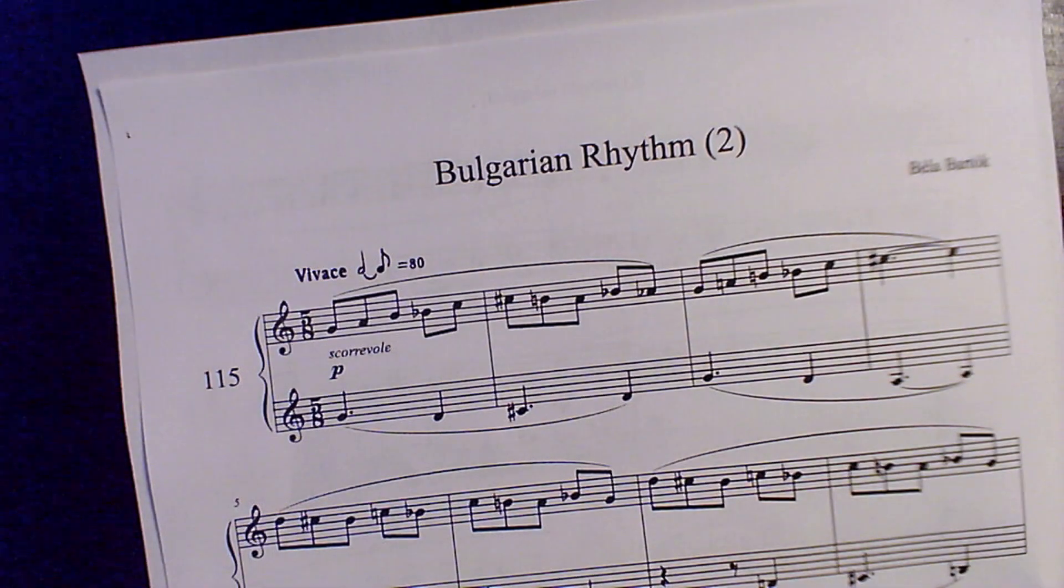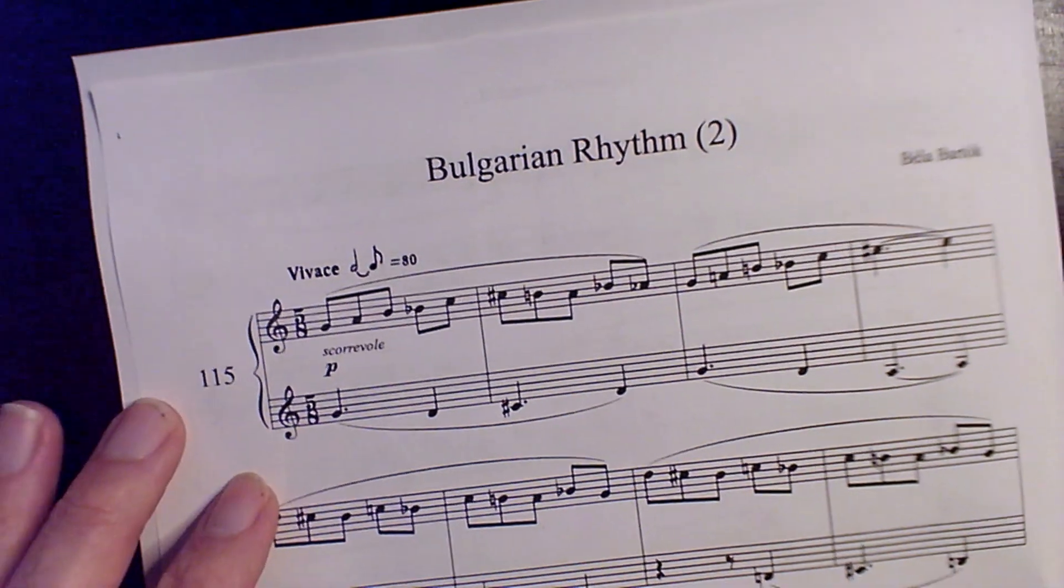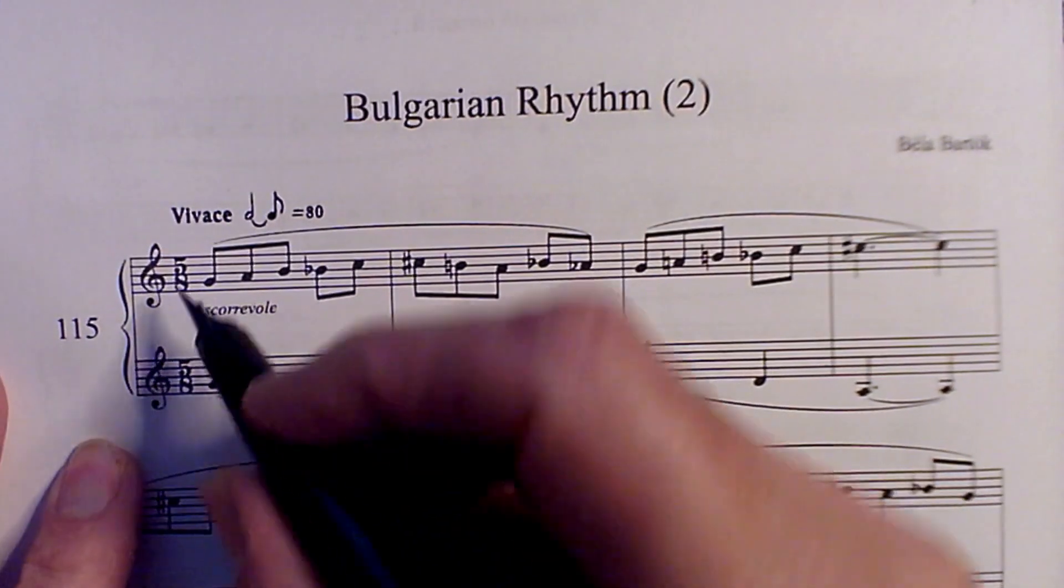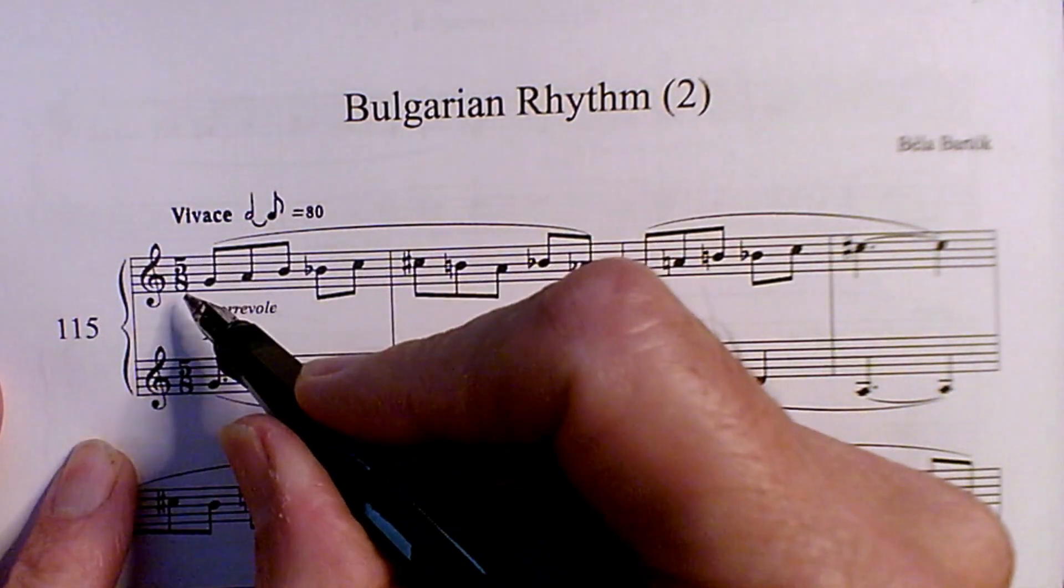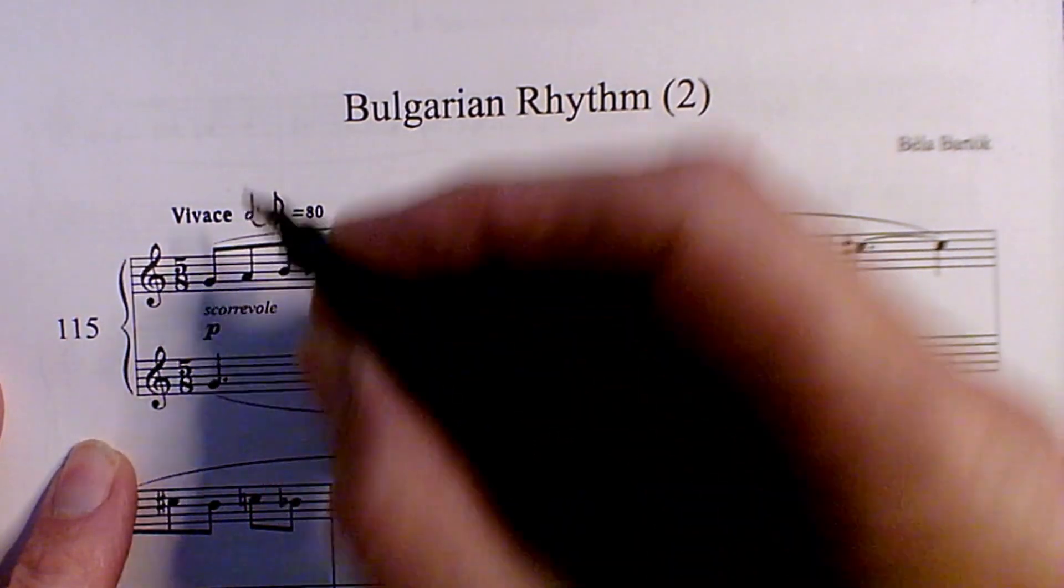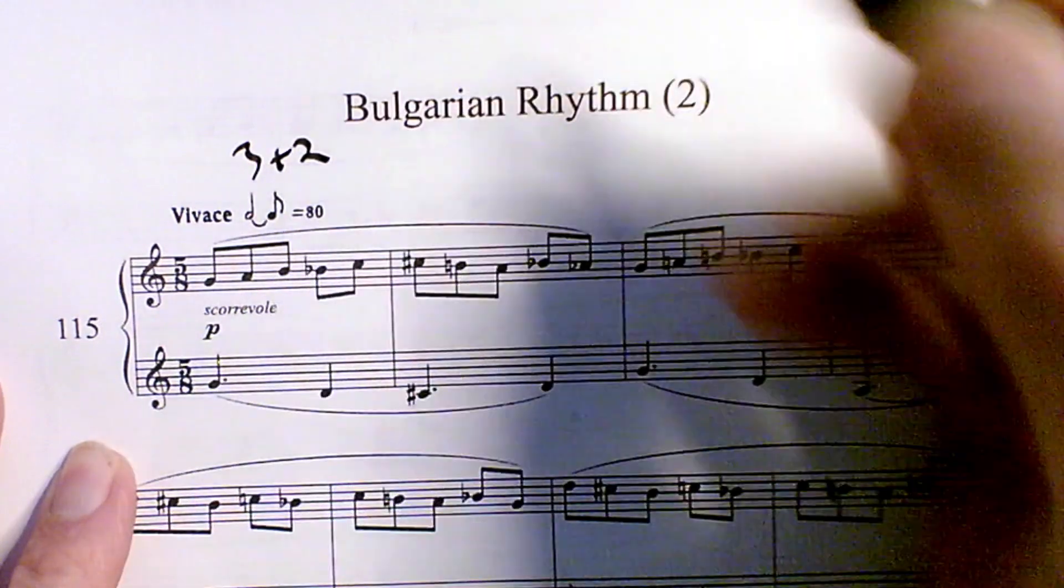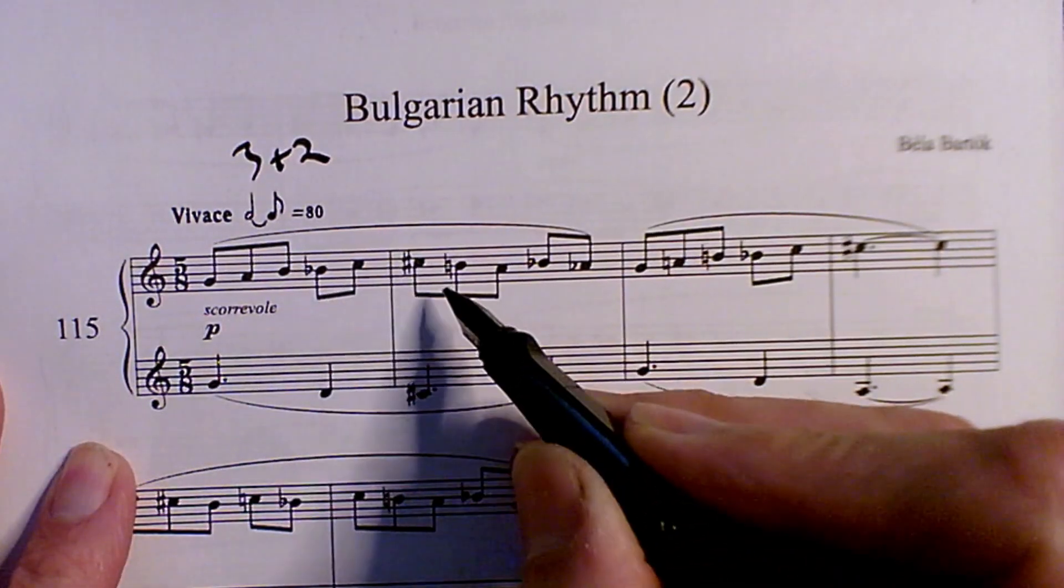First, it might be helpful to do a quick overview of the piece. We can see that the piece is in 5/8 time and the groupings are 3 plus 2. So, 1, 2, 3, 1, 2.